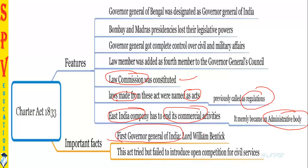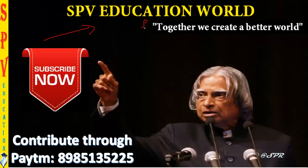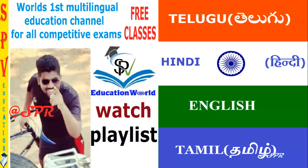East India Company ended its commercial activities and became a high-level administrative body, fully concentrating on administration of India. The first Governor General of India was Lord William Bentinck. There was an attempt to open civil services to open competition, but it failed. These are the things made in the 1833 Act. Thank you for watching SPV Education World — together we create a better world. Subscribe to our channel, contribute for further development, and watch our playlist for more details. This is SP Rajan signing off — kindly share with more friends, and in future I'll come up with more interesting classes on polity. Bye, take care.